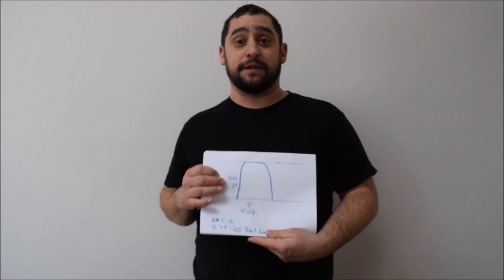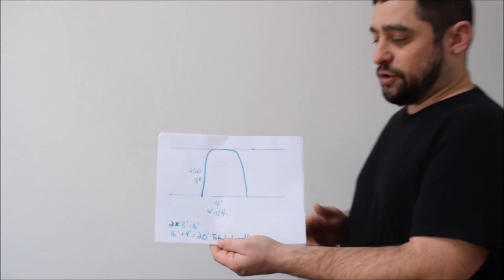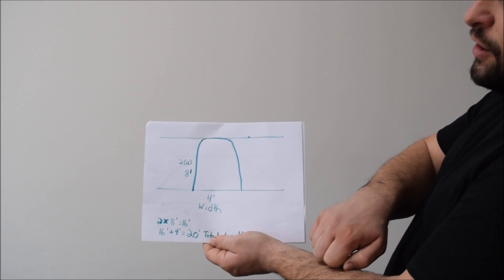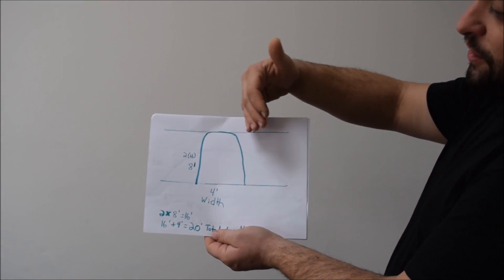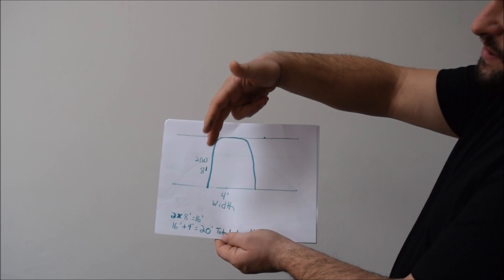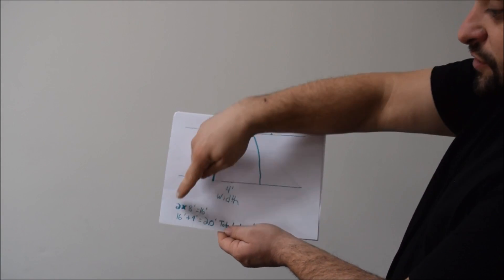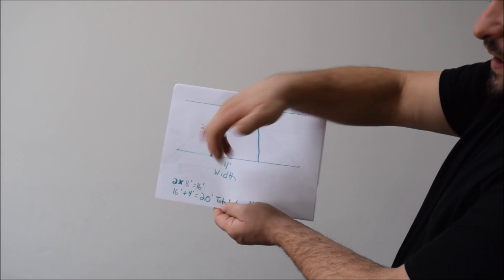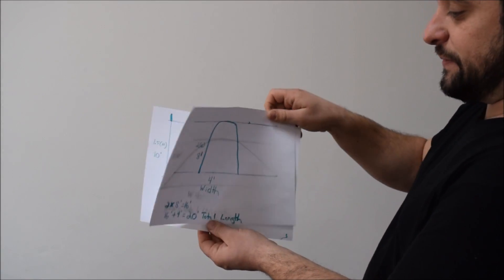Say you have a three-foot door and you want a little arch over it. The first example is when the height of your arch is bigger than your width. So we have an eight-foot high arch and a total width of four feet. Since the height is larger than the width, you take two times eight feet, which equals sixteen feet, plus the four-foot width — that gives you twenty feet total.